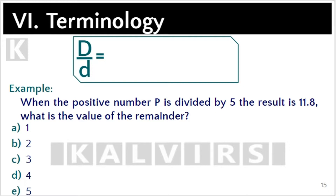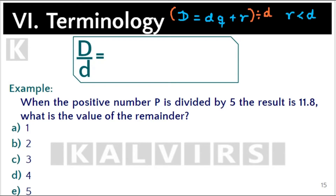The division formula states that the dividend equals the divisor times the quotient plus the remainder, and the remainder is always smaller than the divisor. Now, what happens when the general formula is divided by the divisor? If we divide everything by the divisor we get the following.